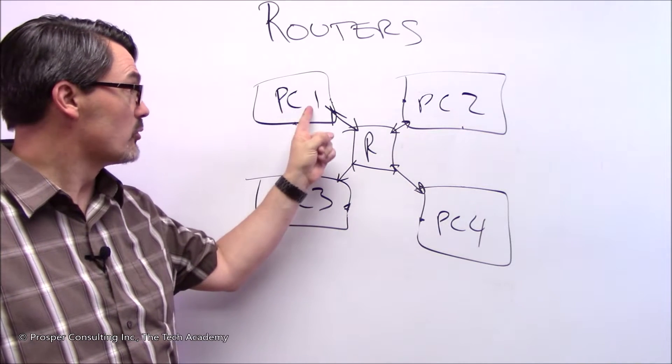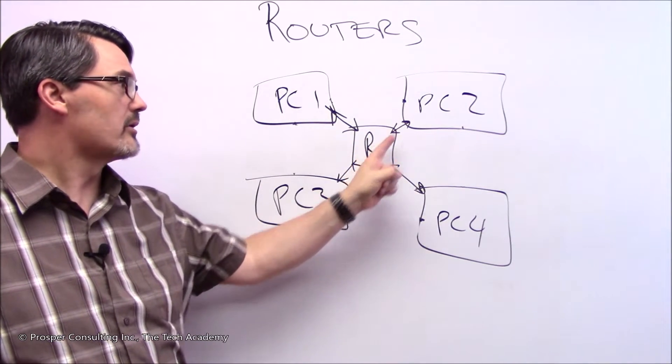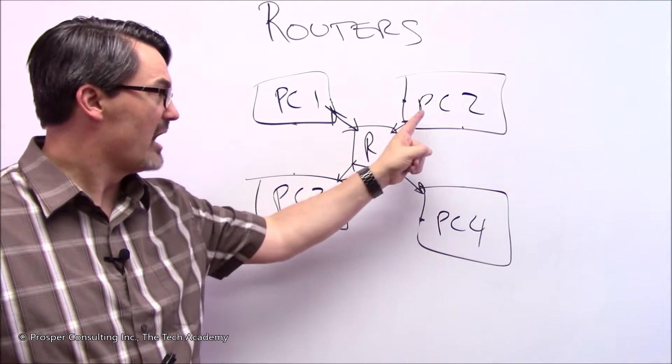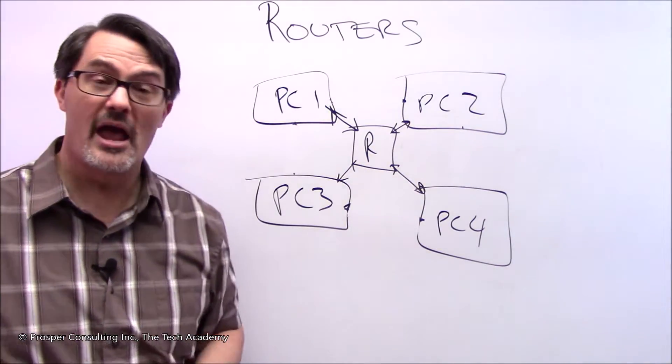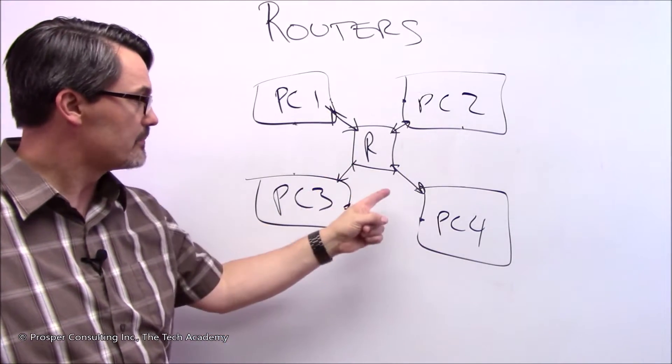Now, if computer one wants to send something to computer two, it sends it to the router. The router contacts computer two, says hey, you ready to receive some information? Say sure, and it sends it on. And then once it's successfully there, router can tell the computer one, hey, I sent your message to personal computer two, and so on.